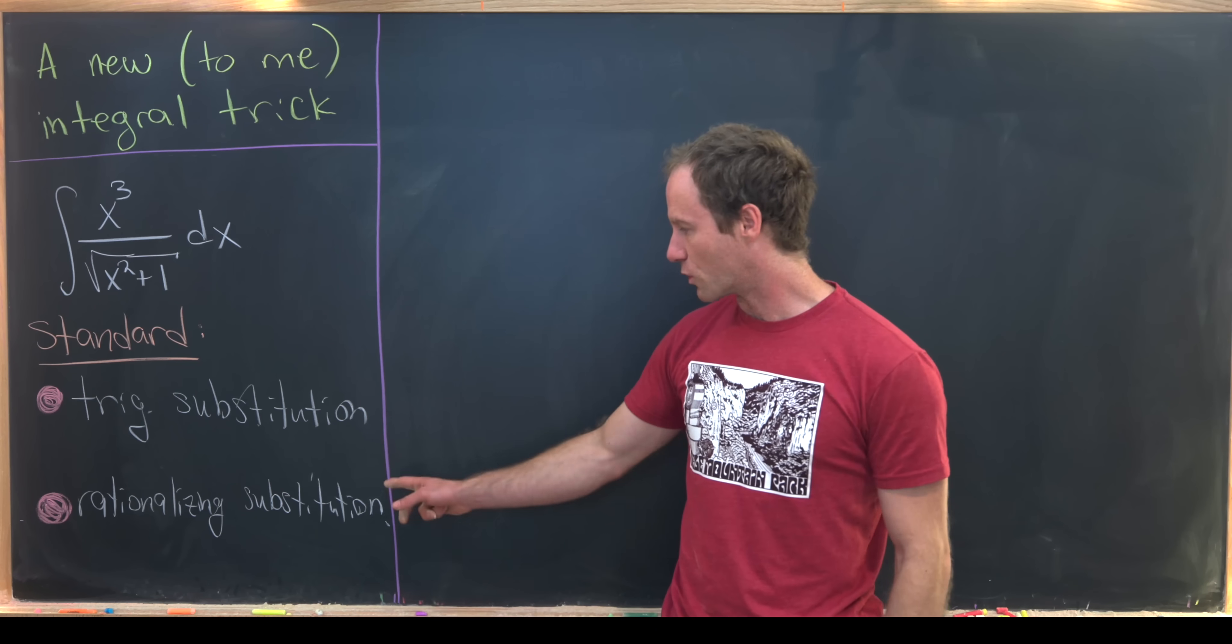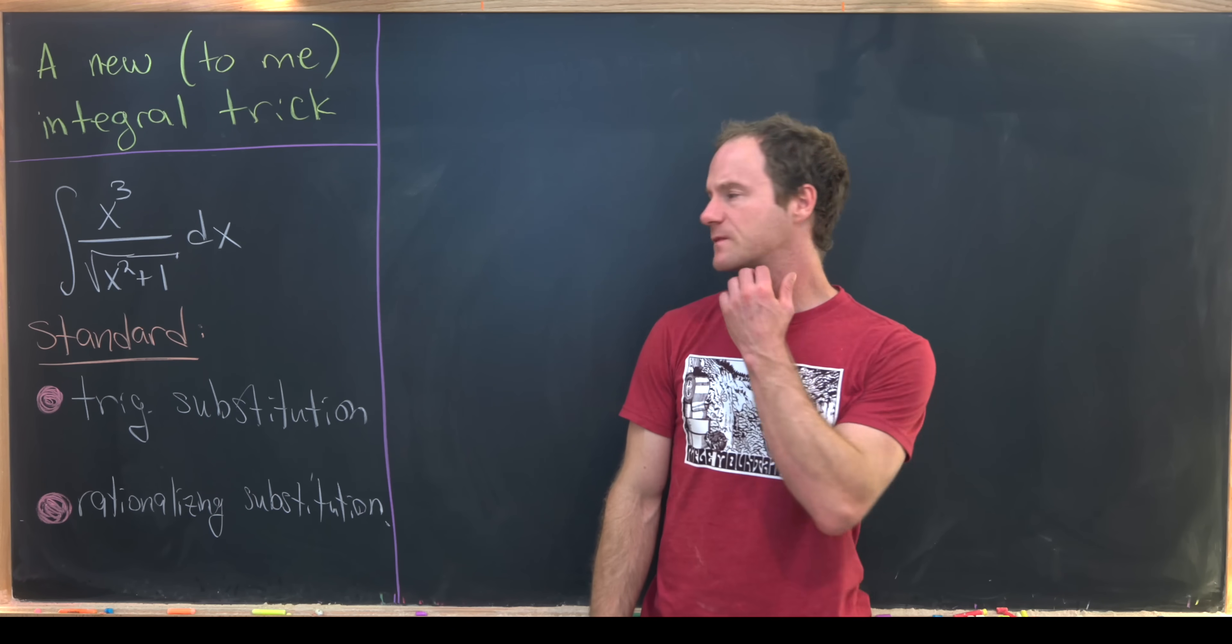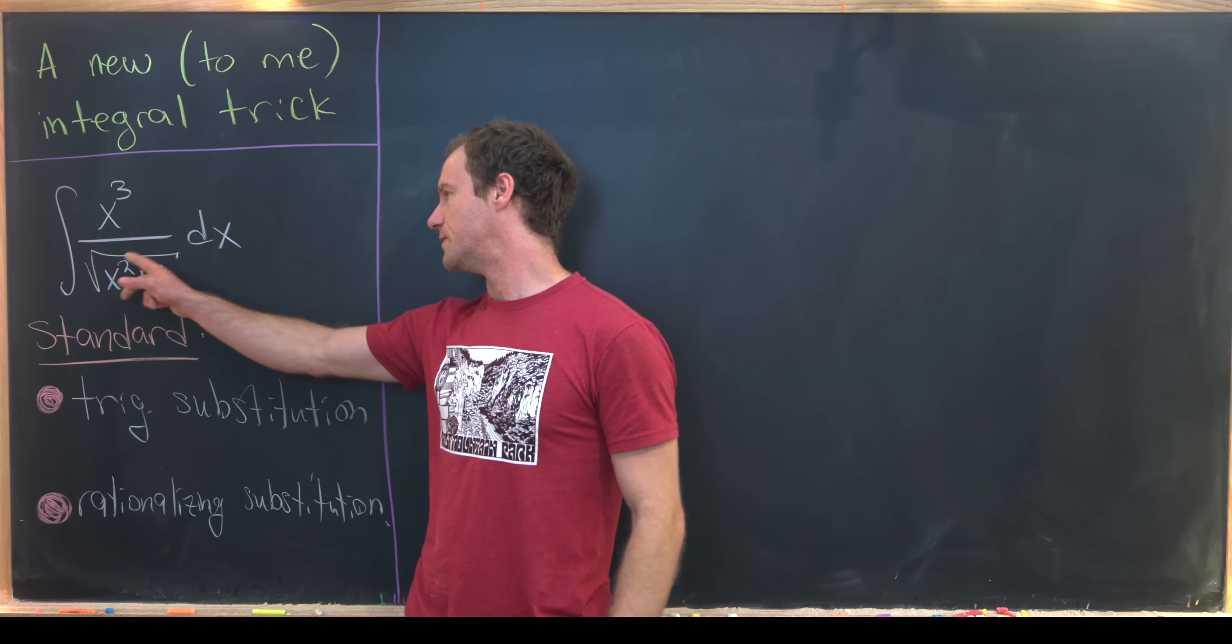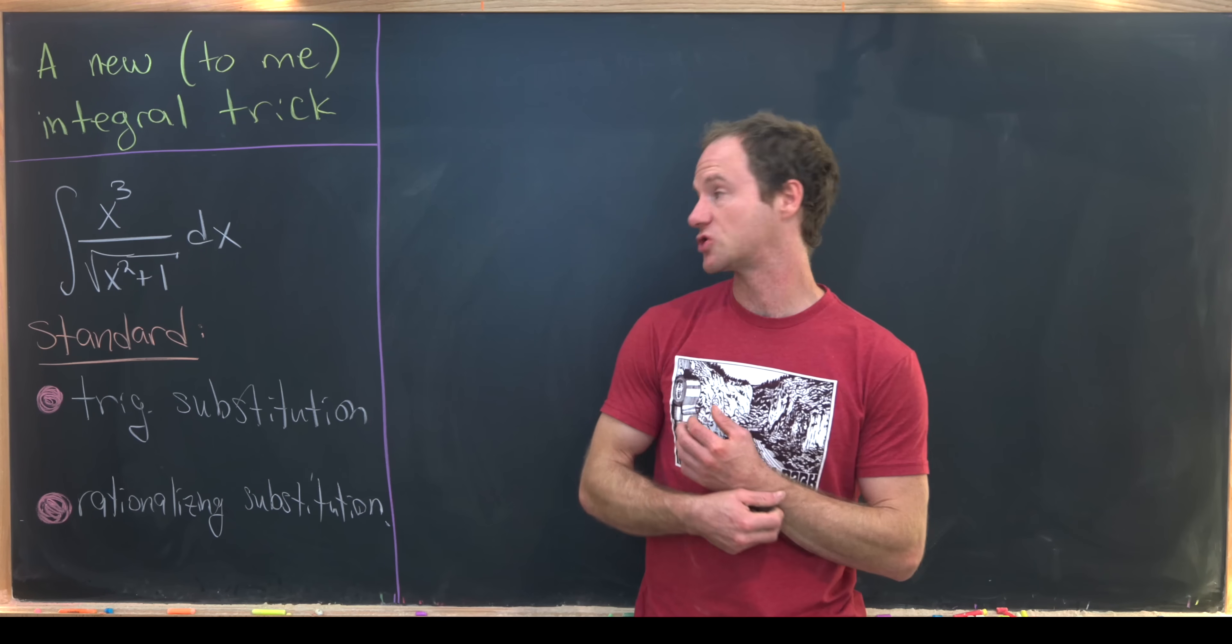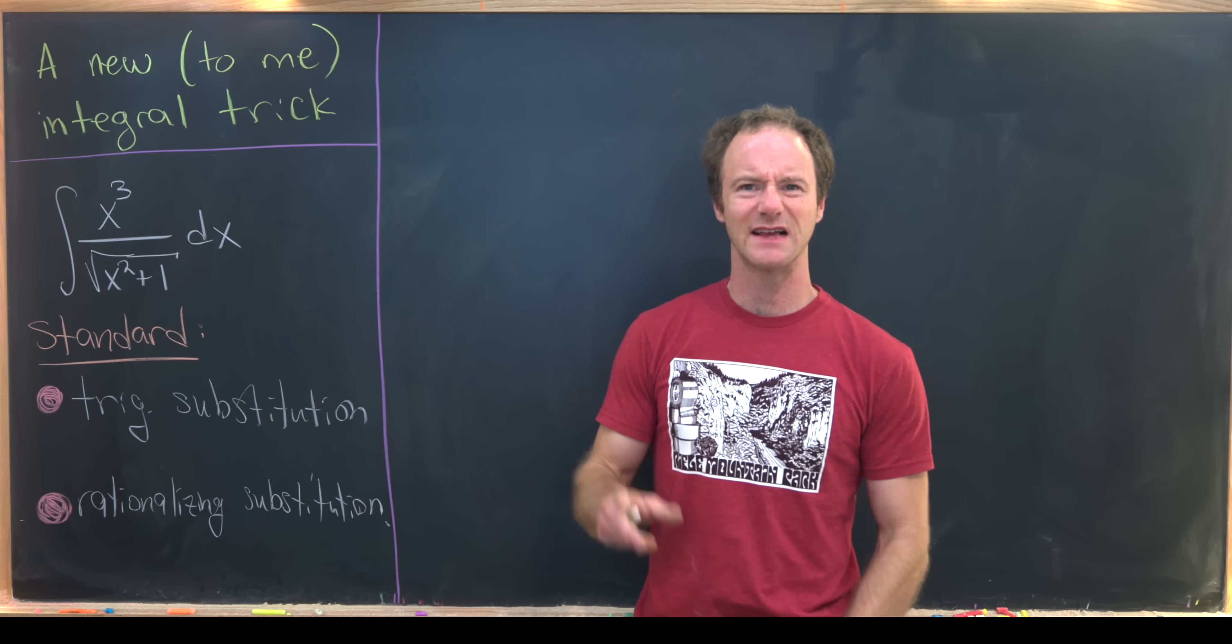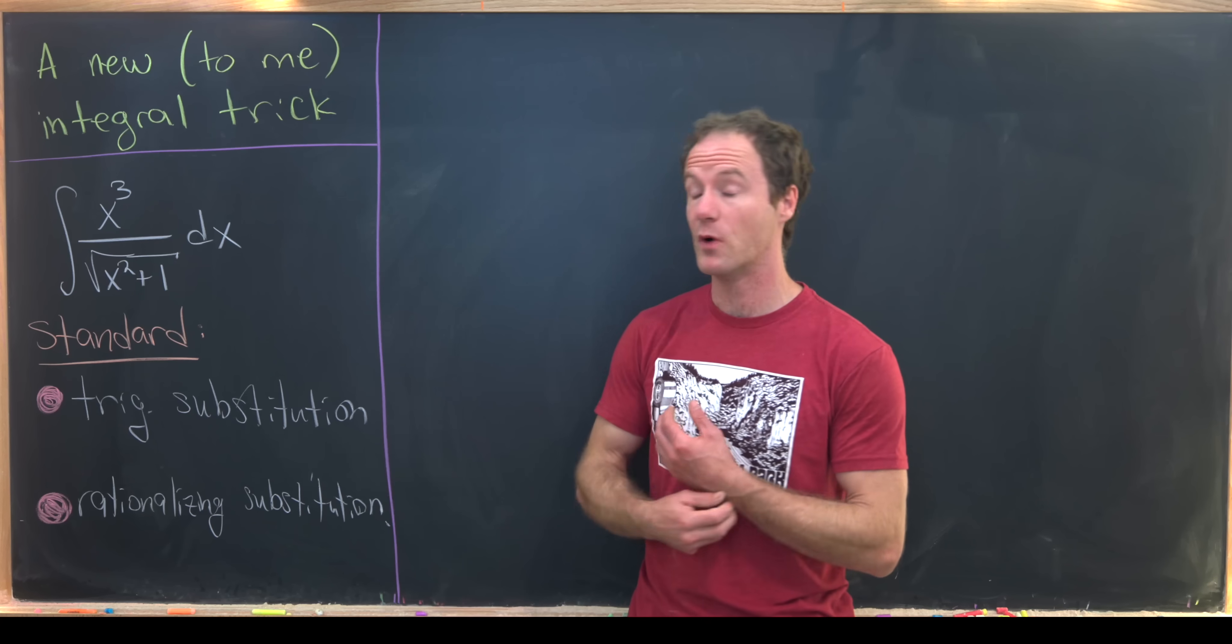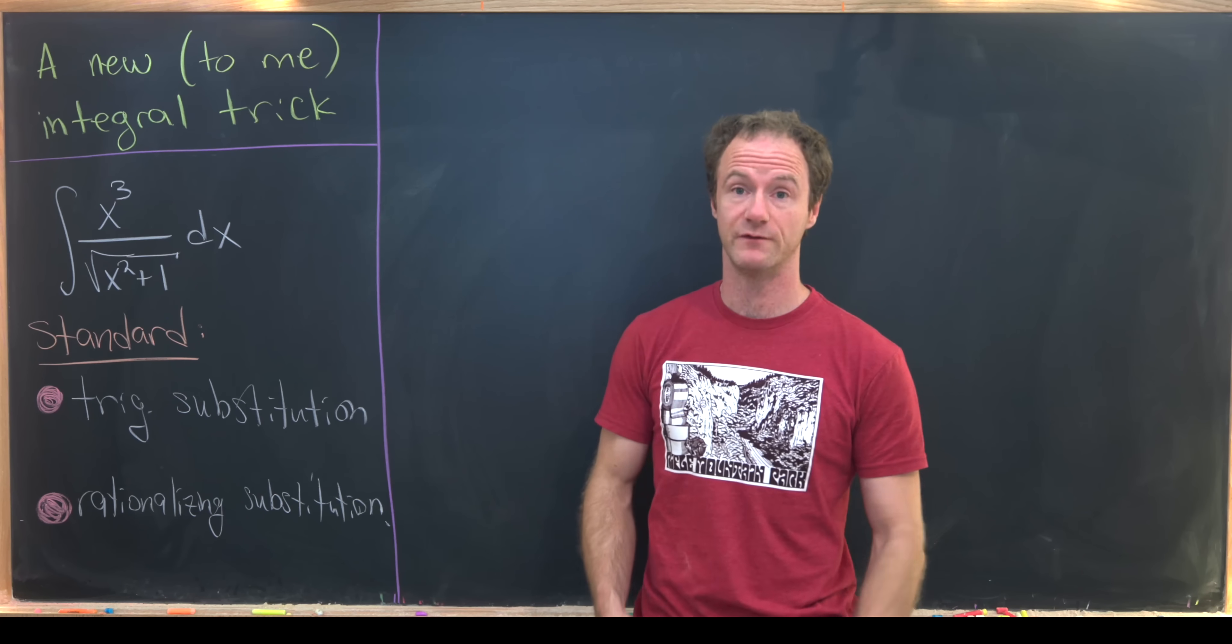You can actually do a rationalizing substitution here as well. Let's notice that if you let u be the inside of this square root, well then the numerator has something to do with u times du. I'll let you guys think about both of these methods on your own if you want to.